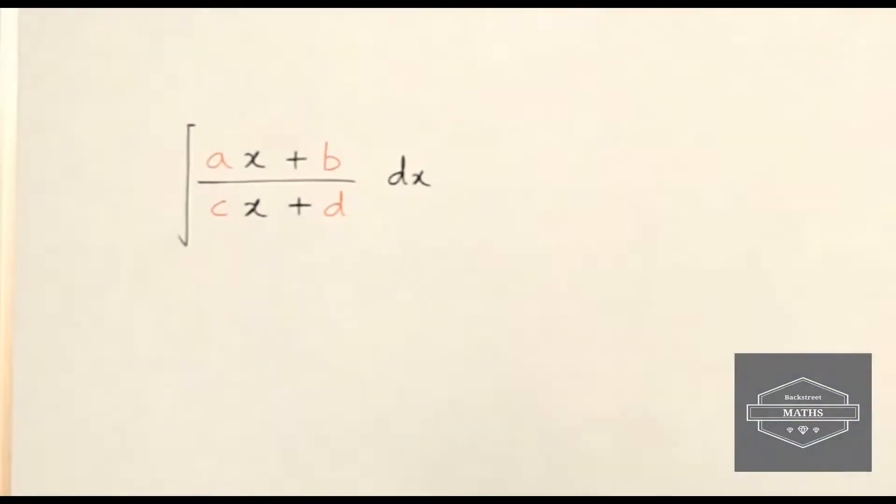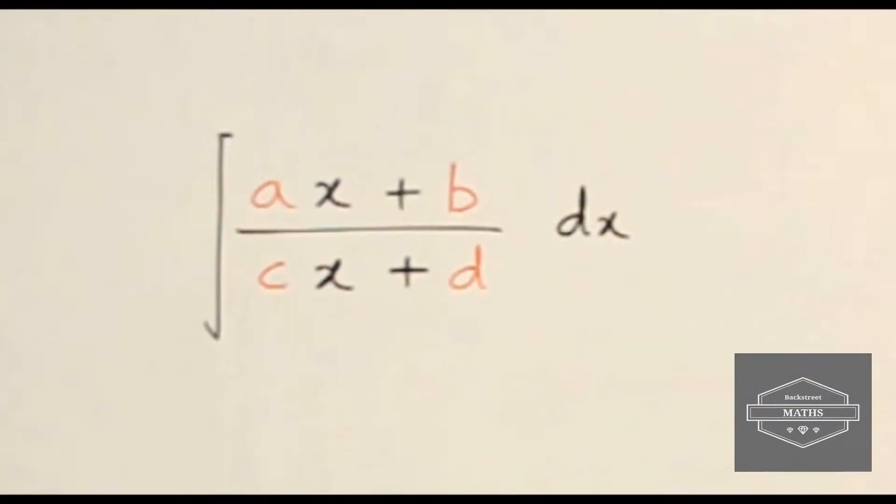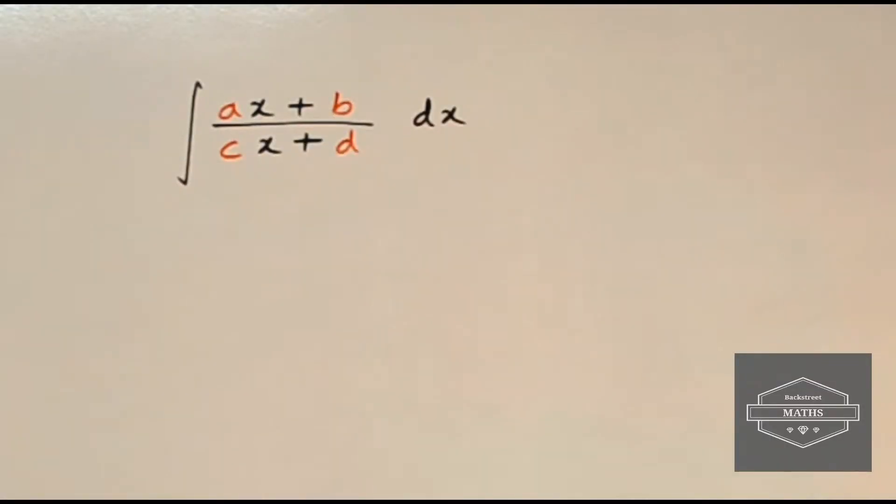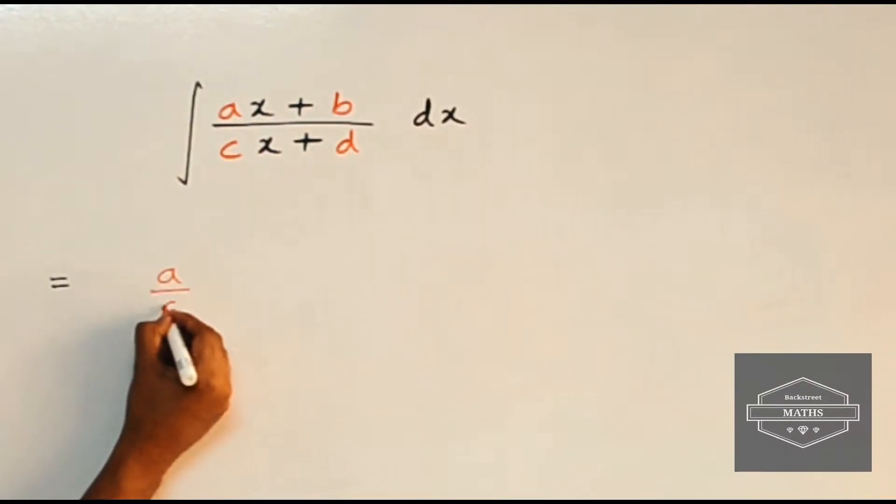And as for now, let's focus on this shortcut. All right, so here we go. Integral of the form ax plus b upon cx plus d is given by, this is equal to, in the first term we have to write a upon c. So here I got a upon c, this is the first term.